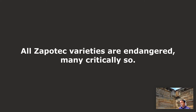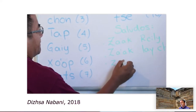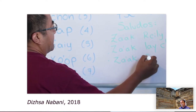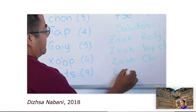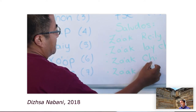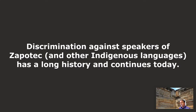Despite the fact that there are so many speakers in Oaxaca, Zapotec has no official de facto status in the state. And although historically speakers of Zapotec wrote their language, that chain of literacy was broken. So in the current day, most speakers don't write their language, although that's changing. Discrimination against speakers of Zapotec and other indigenous languages has a long history and continues today.